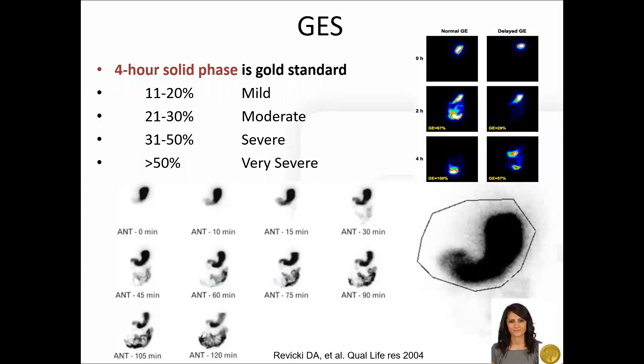This image demonstrates an example of the results of a gastric emptying study. A small amount of radioactive material is ingested with food and the progression of the substance is tracked out of the stomach over time. A four-hour exam is the gold standard.